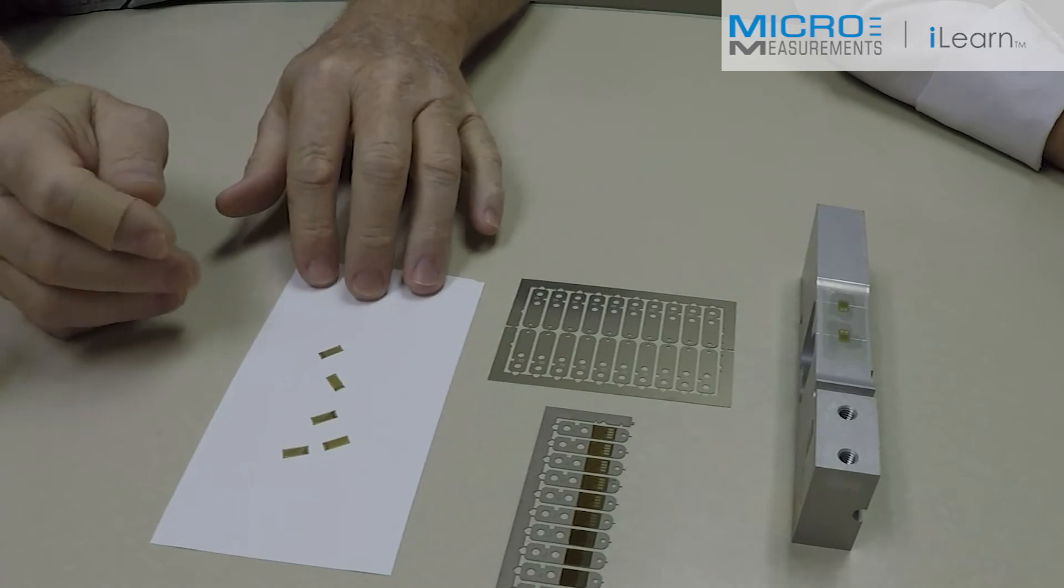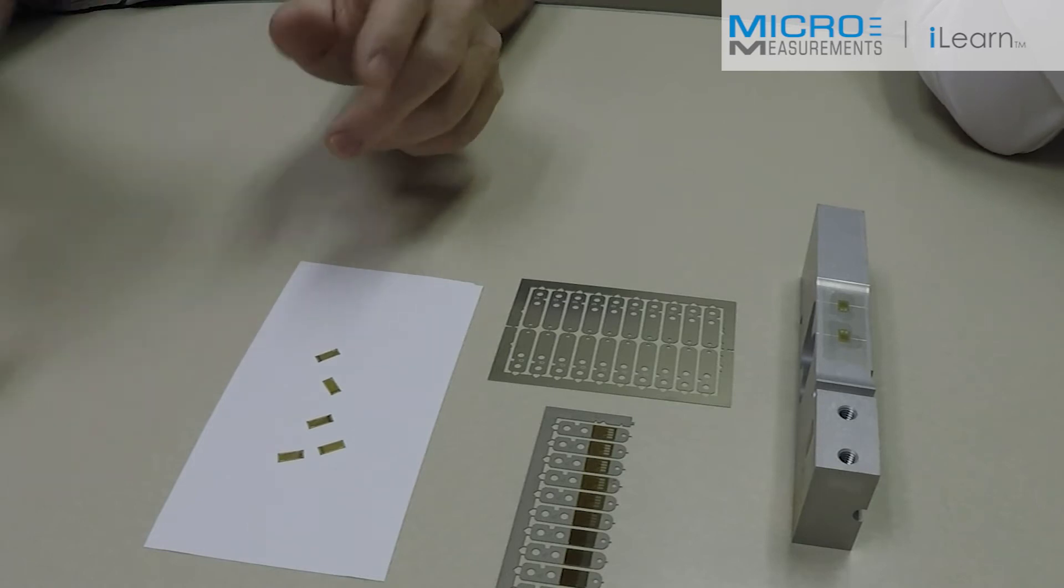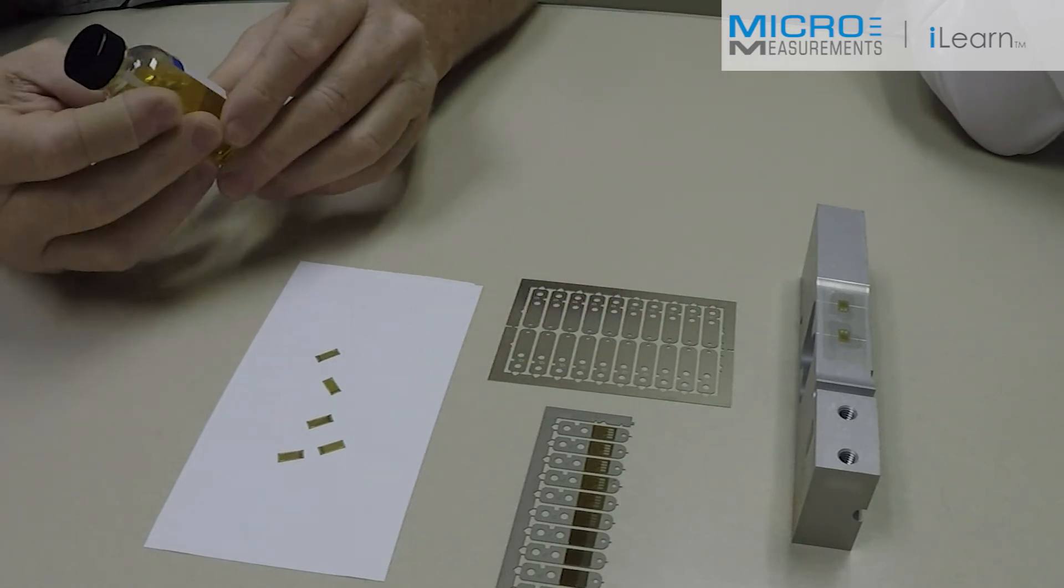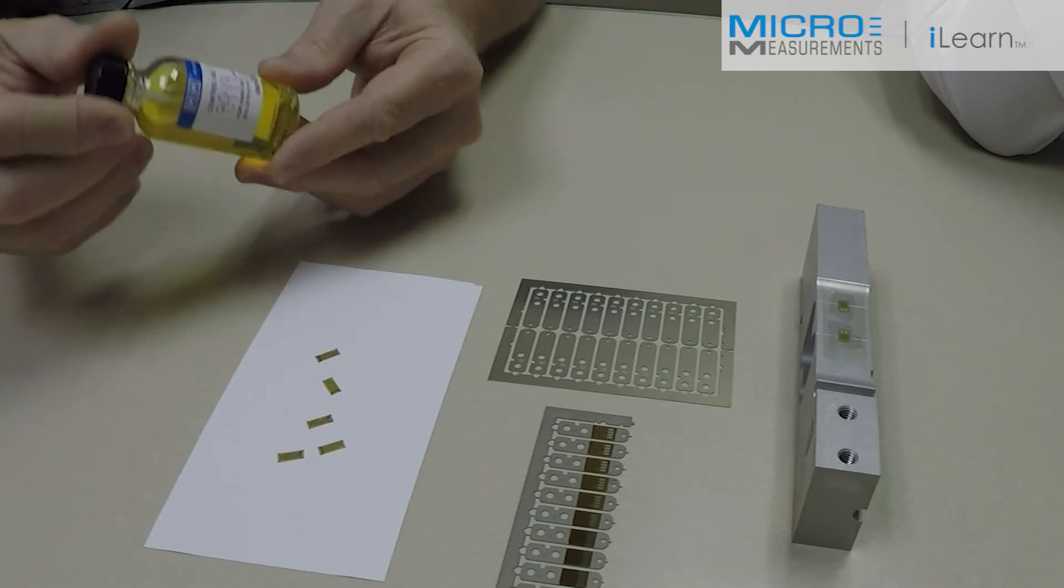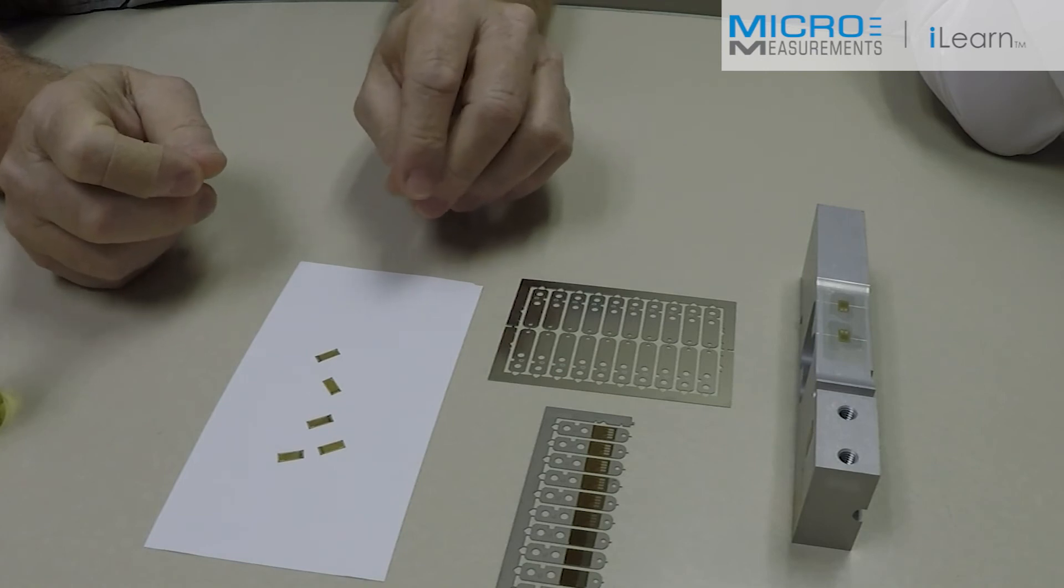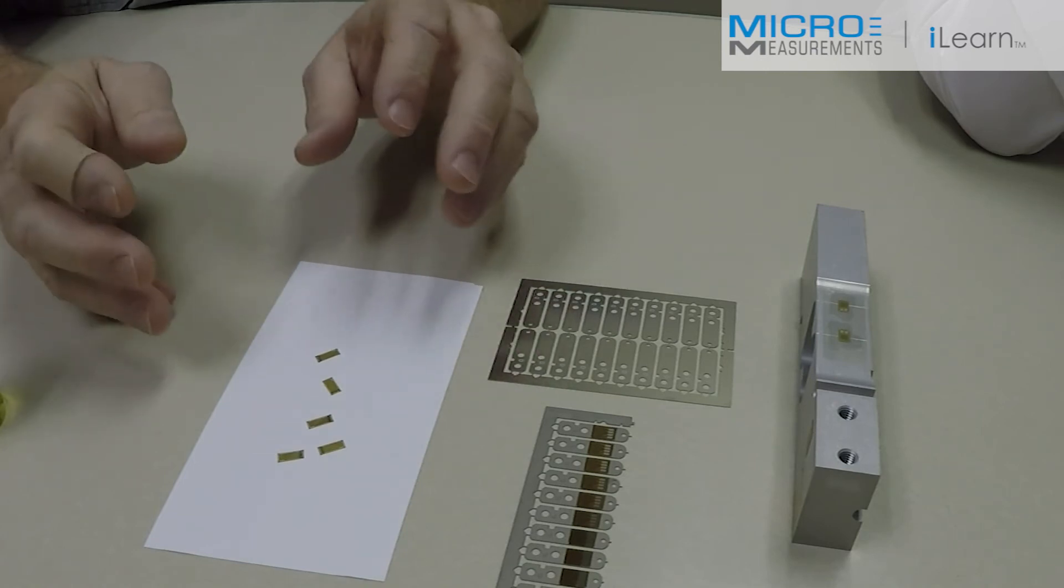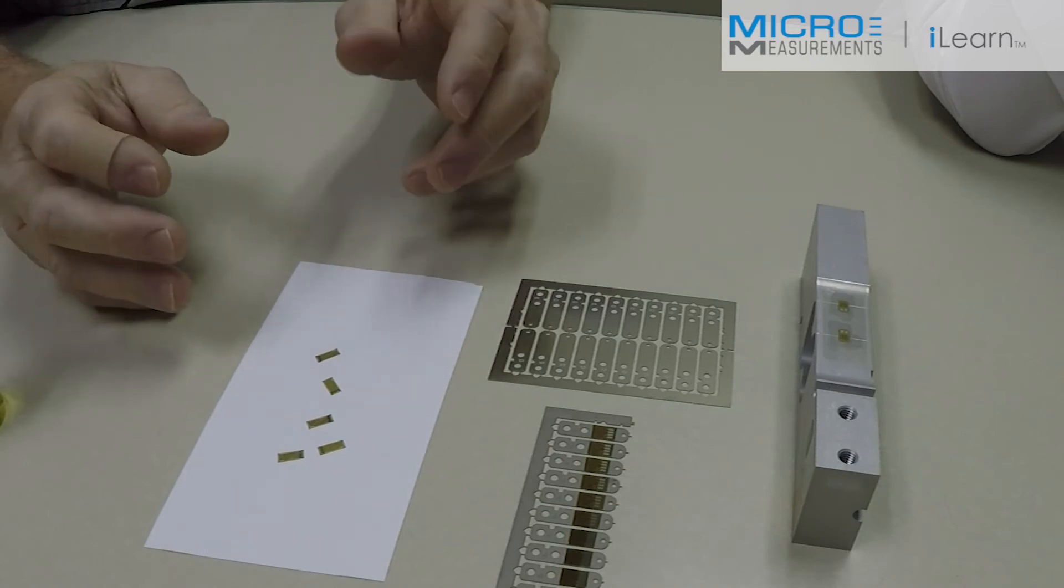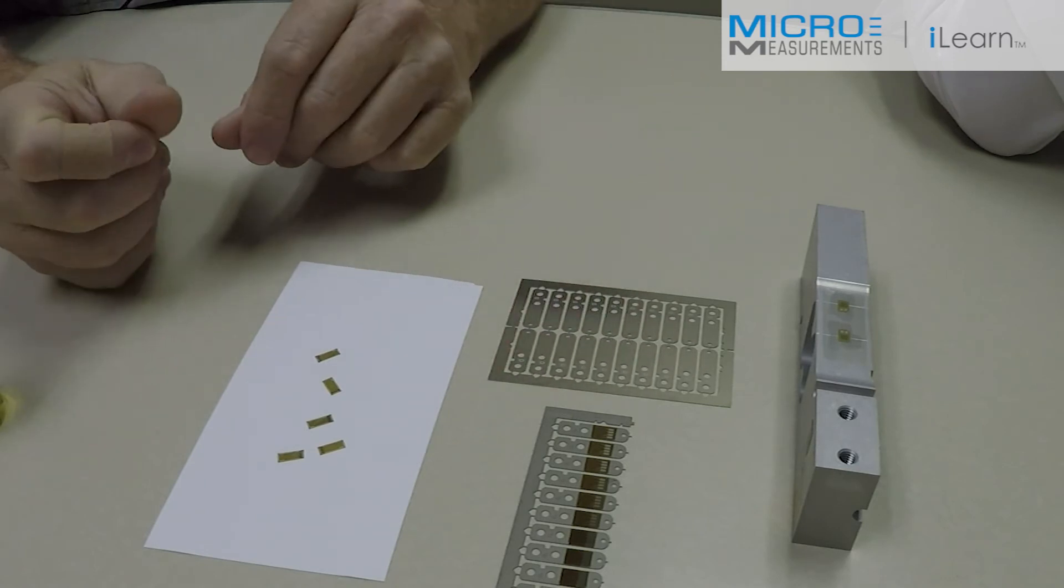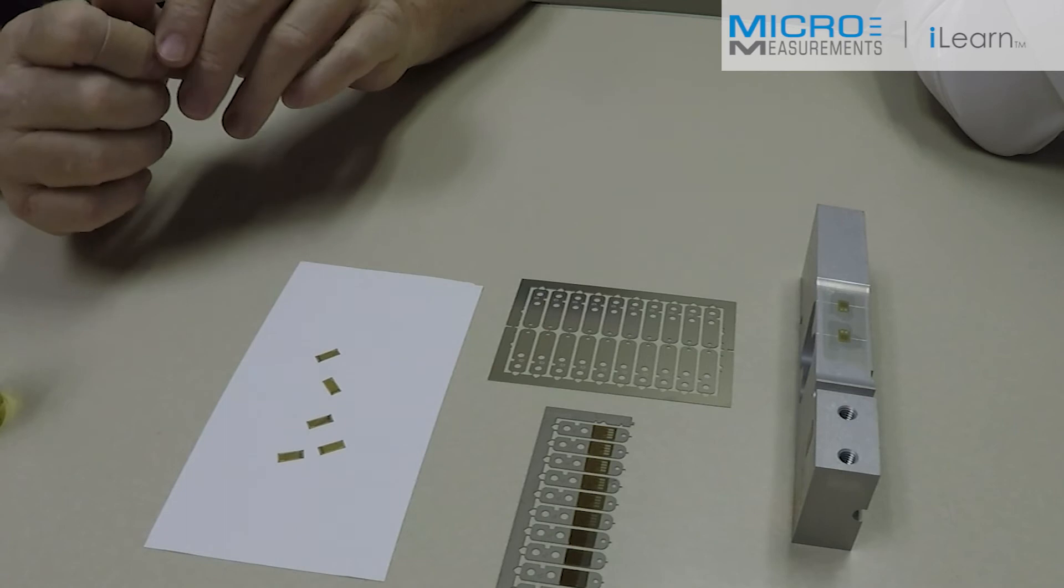So the benefits of the B-stage gauges with pre-applied resin is that you don't have to buy a separate bottle of adhesive, another inventory item that you have to control for storage and all that. You can handle the gauges with the adhesive on them and not worry about damaging them as long as you don't get them wet. It's just quick and reduces one step in the process.